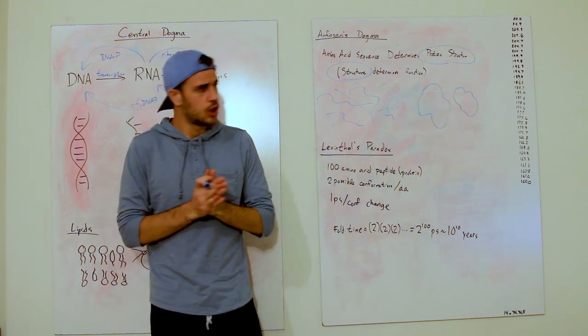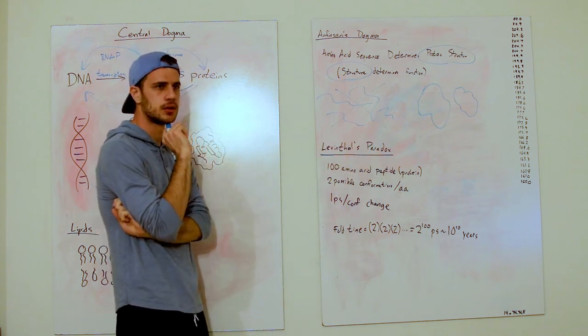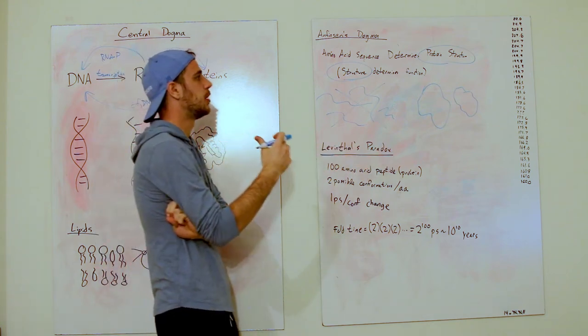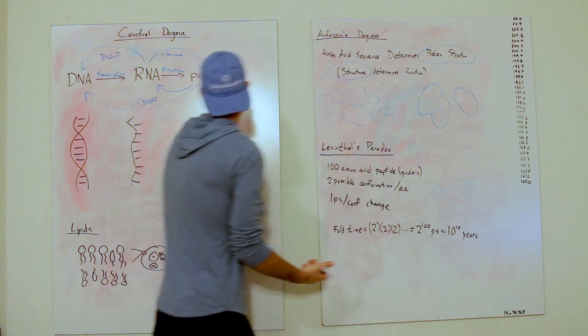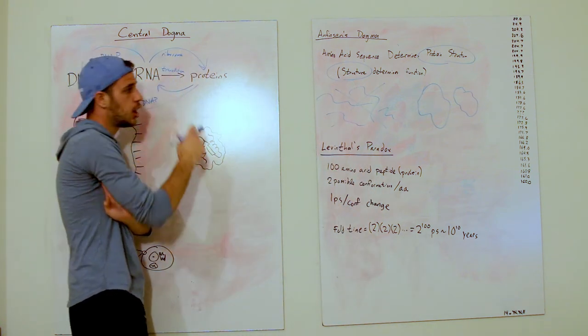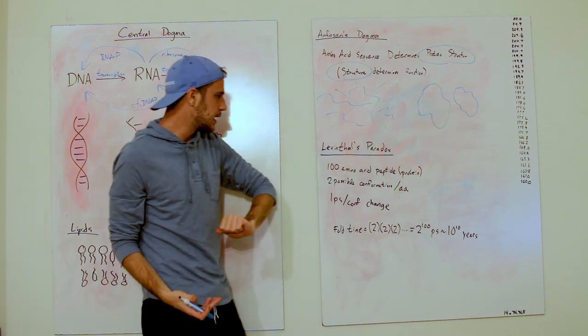But how does it get there? How does it get from wiggly boy? Because when you create a protein in the ribosome, you actually create a wiggly boy and then it has to form into this compact thing. Now, that's where Levinthal's Paradox comes in.